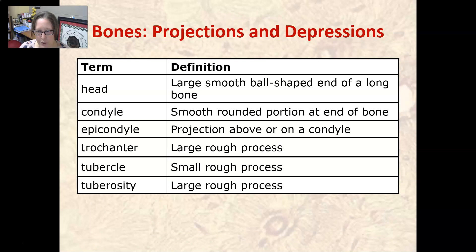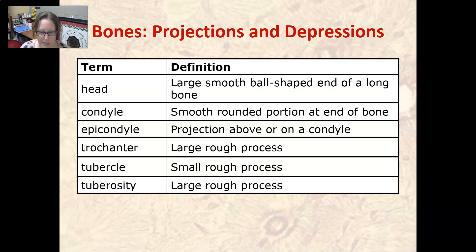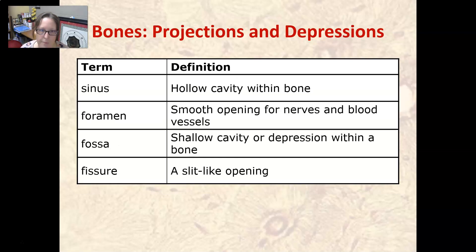Let's talk about the projections and depressions found on bones — they have specific terms. The head is the large smooth ball-shaped end of a long bone. A condyle is a smooth rounded portion at the end of a bone. An epicondyle is a projection above a condyle. A trochanter is a large rough process; a tubercle is a small rough process; a tuberosity is a large rough process. A sinus is a hollow cavity within the bone; a foramen is a smooth opening for nerves and blood vessels; a fossa is a shallow cavity or depression; and a fissure is a split-like opening.